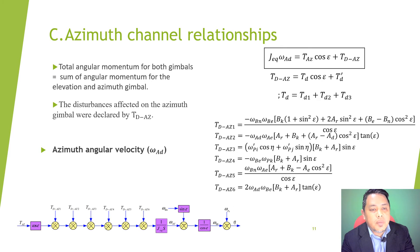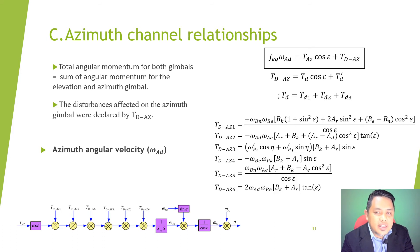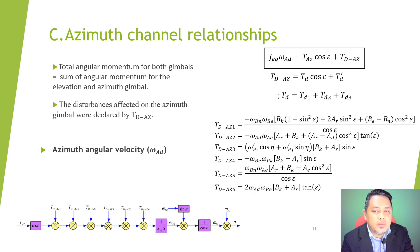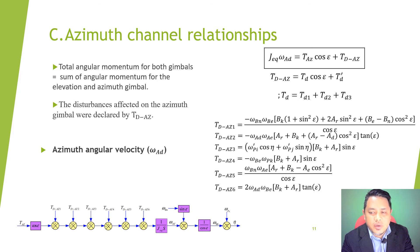Azimuth channel relationship: the total angular momentum for both gimbals equals the sum of angular momentum for elevation and azimuth gimbal. To get the equation for disturbance at the azimuth channel, the total external torque tz is derived using the same approach as the elevation channel. The disturbance on the azimuth gimbal is declared by tdAz, where tdAz1 is from the term td1, simplified to the torque tdAz equals tdcos(t) plus td. The following expressions give us tdAz1, tdAz2, tdAz3, tdAz4, tdAz5, and tdAz6 as the total torque components for the azimuth channel.